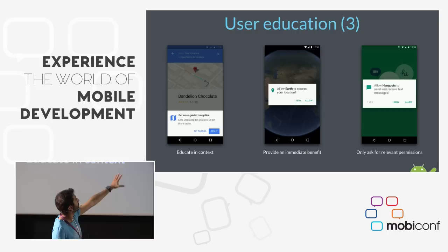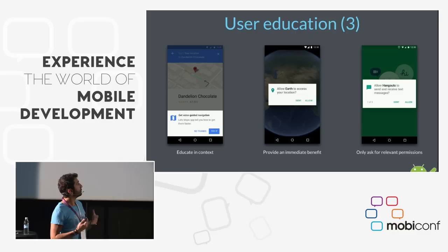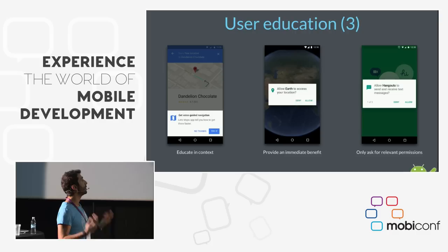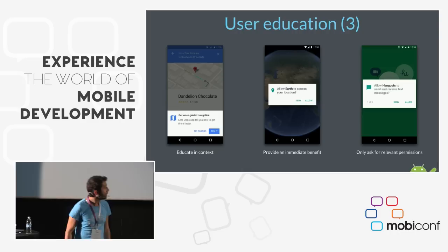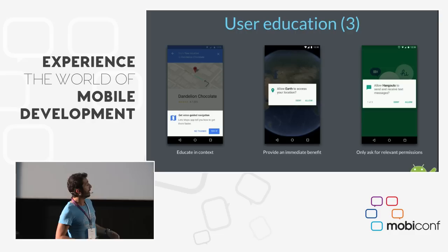'Provide an immediate benefit' — this is a great example with Google Earth. Google Earth asks to access location. When the user opens the app and allows the permission, Google Earth focuses on the user's location and moves the world with a nice effect. So Google Earth is rewarding the user for accepting this permission. We can play with this kind of gamification.